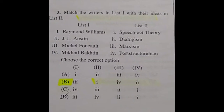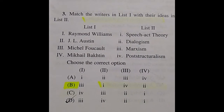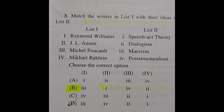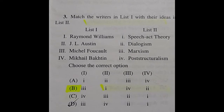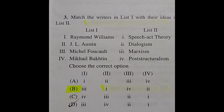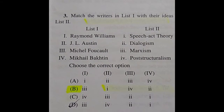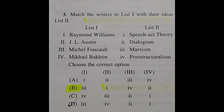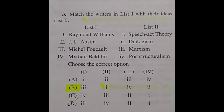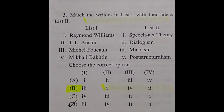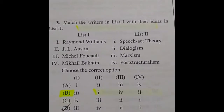Question 3: Match the writers in List 1 with their ideas in List 2. List 1 has Raymond Williams, J.L. Austin, Michel Foucault, and Mikhail Bakhtin. List 2 has Speech Act Theory, Dialogism, Marxism, and Post-Structuralism. The answer is option B: Raymond Williams — Marxism; J.L. Austin — Speech Act Theory; Michel Foucault — Post-Structuralism; Mikhail Bakhtin — Dialogism.